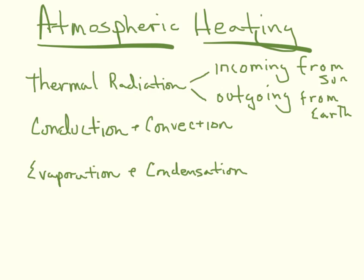The second thing is conduction-convection. Conduction is the transfer of heat through contact — this is warm Earth warming the air that's in contact with the surface. Convection is the rising of warm air because it's less dense than surrounding air, so this is circulation in the atmosphere caused from contact with a warmer Earth's surface.